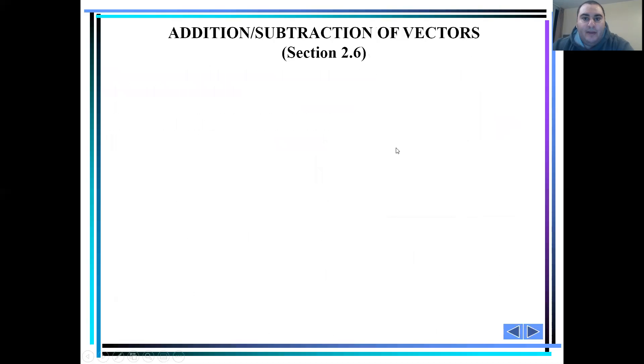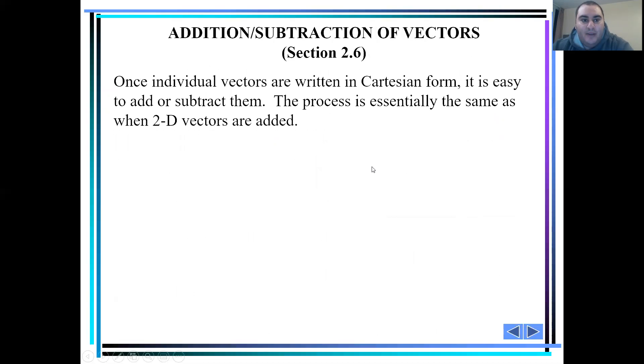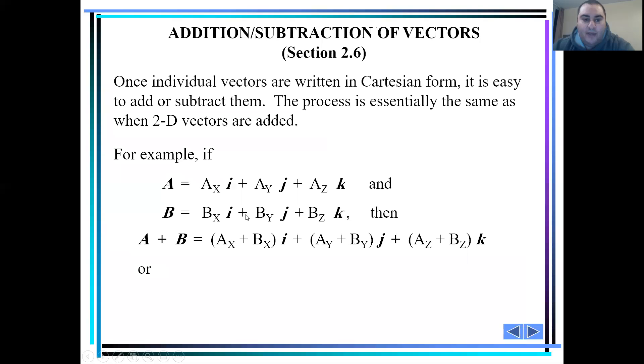Now, addition and subtraction of vectors. Once individual vectors are written in Cartesian form, it's easy to add and subtract them. The process is essentially the same as when 2D vectors are added. For example, if we have vector A and B, if we want to add them together, same thing as the 2D vectors, we take all the i components and add them together, take all the j components and add them together, and take all the k components and add them together to get our resultant vector.